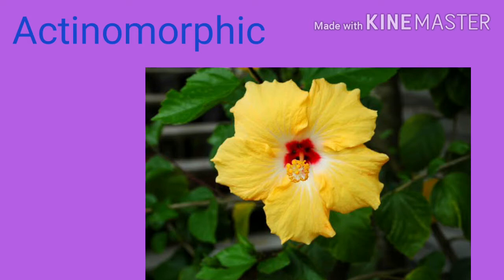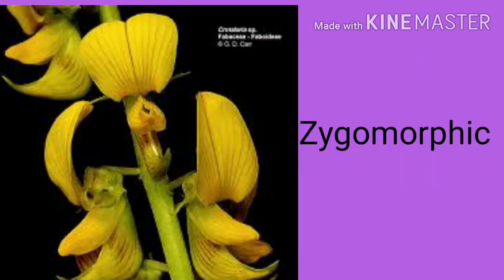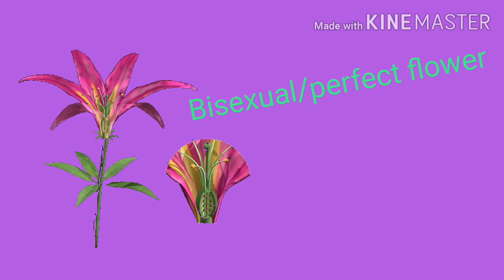A flower which can be cut into two exactly similar halves along any vertical plane passing through its center is said to be actinomorphic — example: hibiscus. A flower which can be cut into two similar halves only along one particular vertical plane is said to be zygomorphic — example: crotalaria.